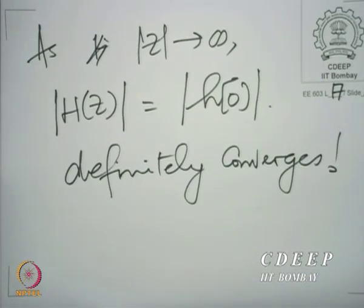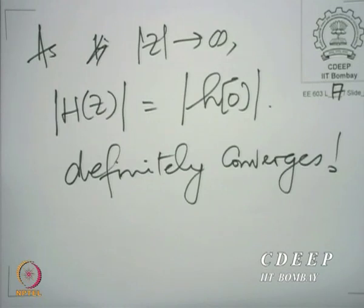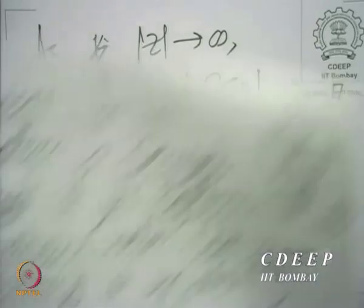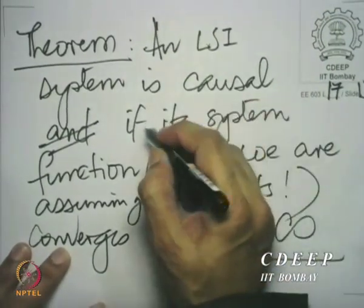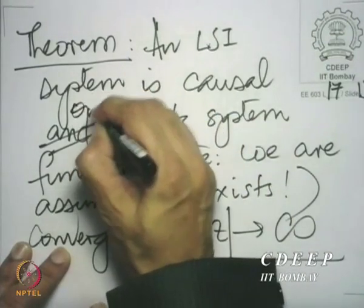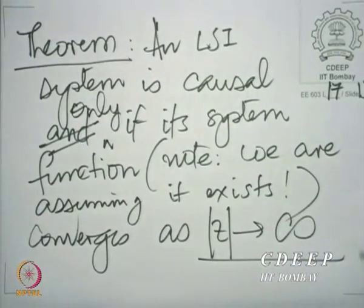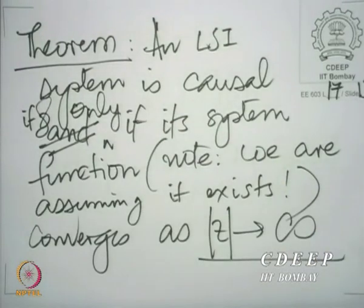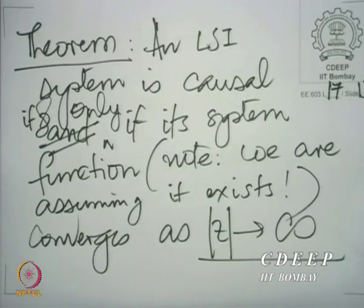Now, this is the if-part. What about the only-if part? What we have proved is that if the system is causal, ensuring h[n]=0 for n<0, then the Z transform — assuming it exists — must converge for z tending to infinity. We have shown that. Now we need to prove the converse.